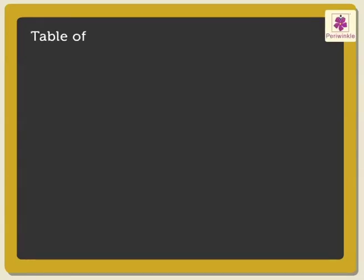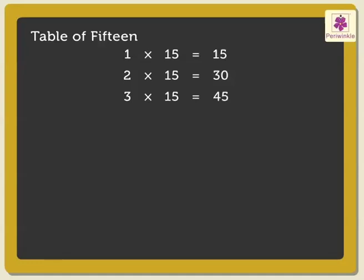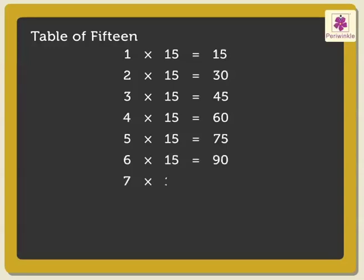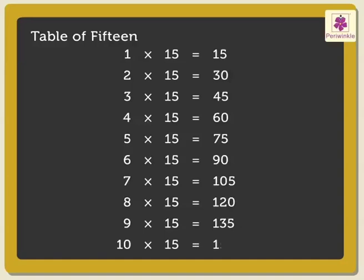The table of 15: 1×15 is 15, 2×15s are 30, 3×15s are 45, 4×15s are 60, 5×15s are 75, 6×15s are 90, 7×15s are 105, 8×15s are 120, 9×15s are 135, 10×15s are 150.